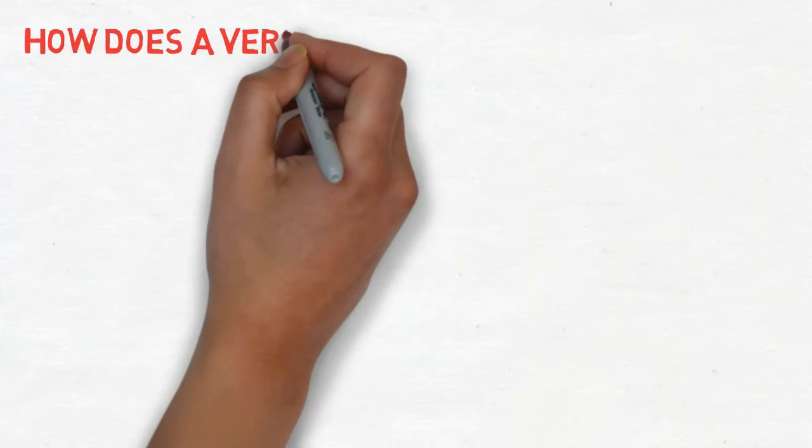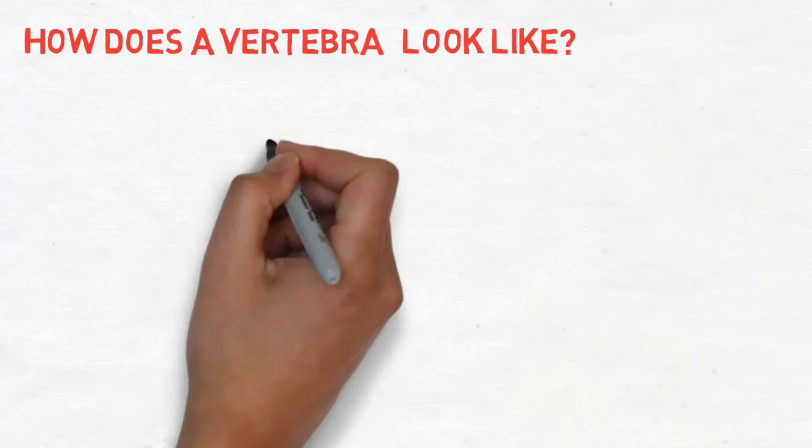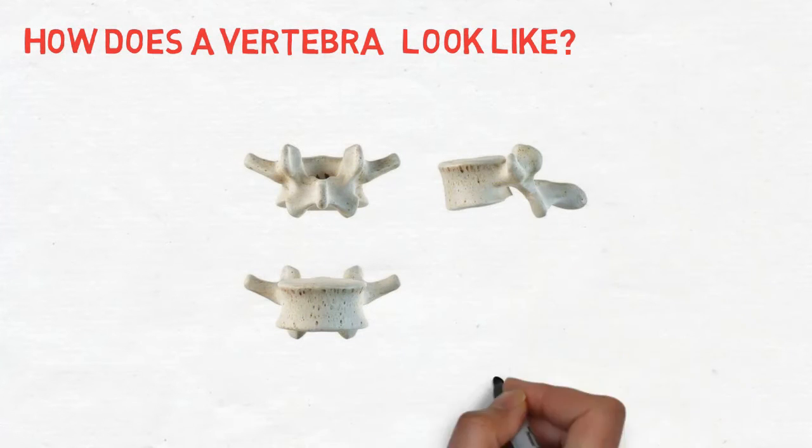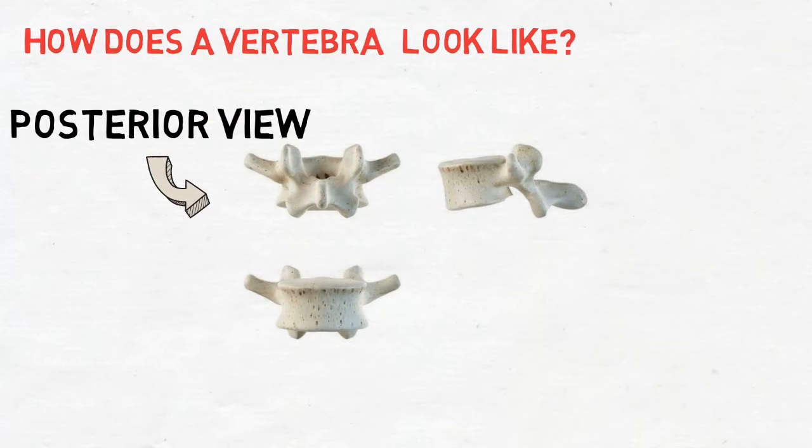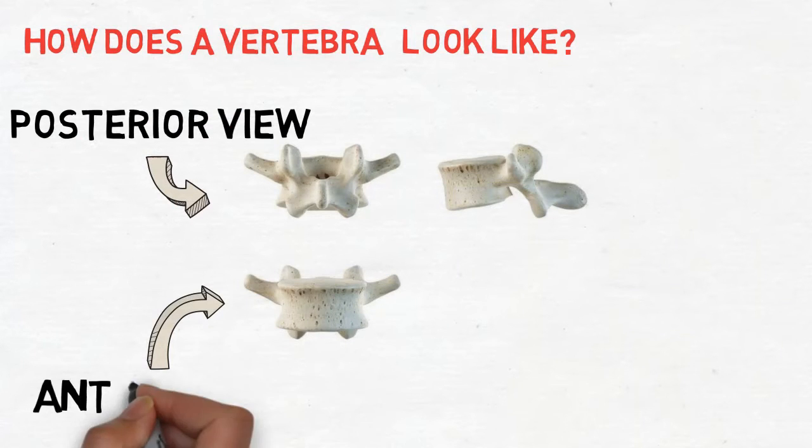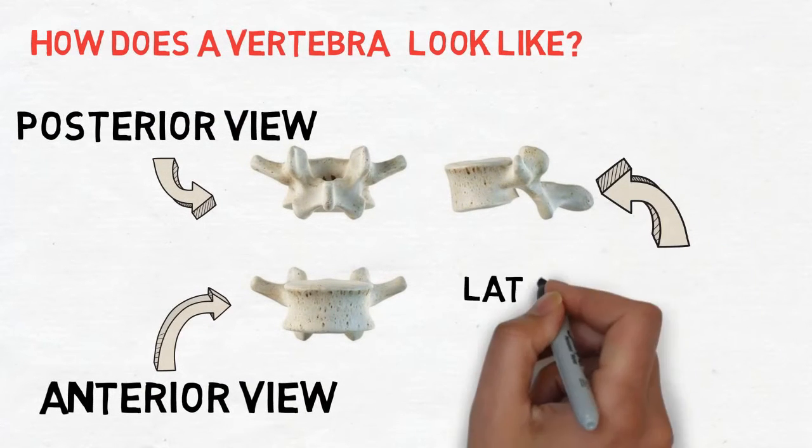Let's have a closer look at the structure of a vertebra. This is the vertebra from different points of view. Firstly, this is the posterior view of a vertebra. This is the anterior view of the vertebra. And this is the lateral view of a vertebra.